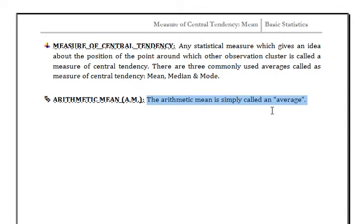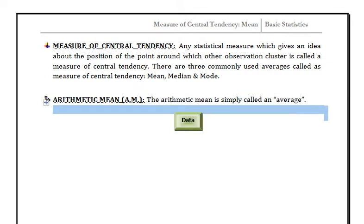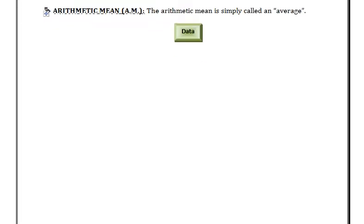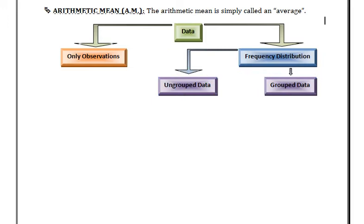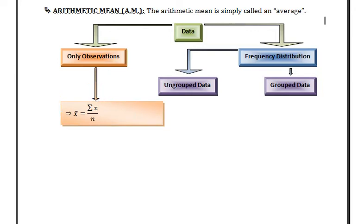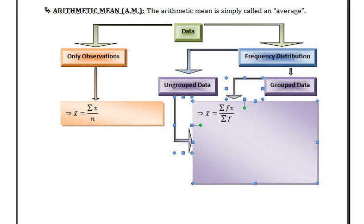The arithmetic mean is simply called an average. We have two types of data: only observation, and frequency distribution. In frequency distribution we have ungrouped data and grouped data. For only observation, mean is summation x upon n, where summation x means addition of all observations and n means total number of observations. For frequency distribution, mean is equal to summation fx upon summation f.